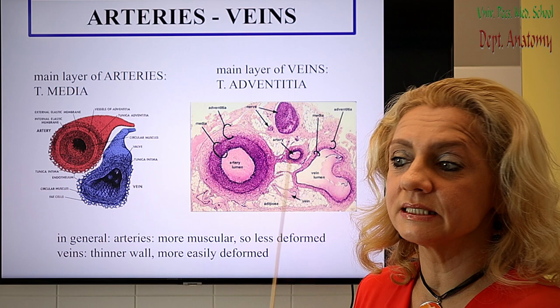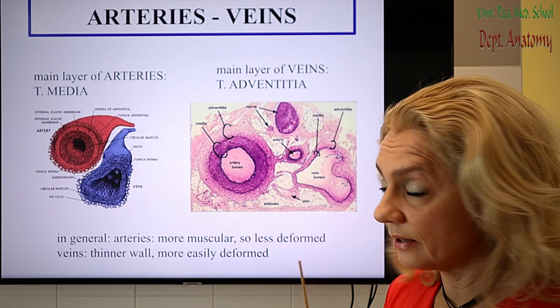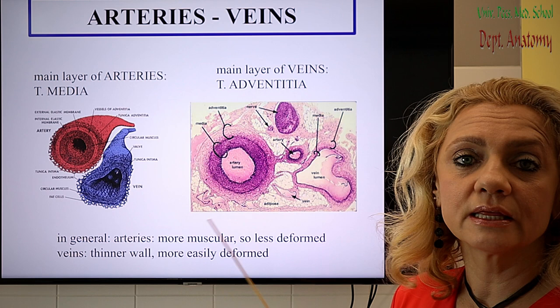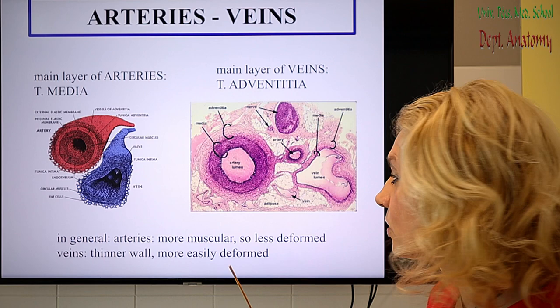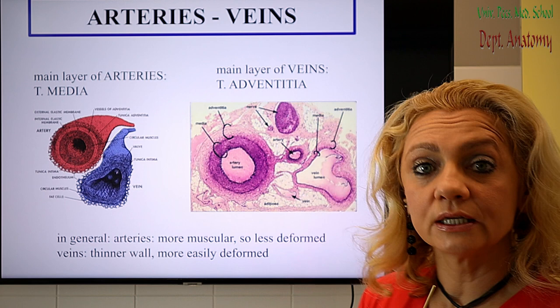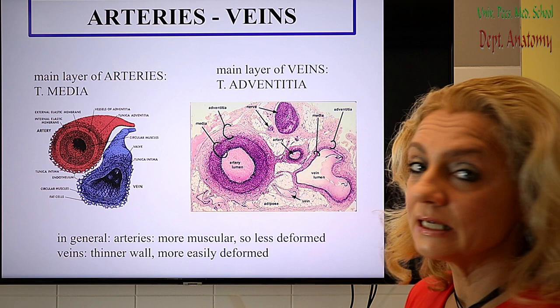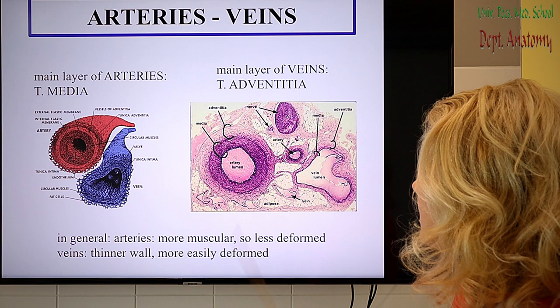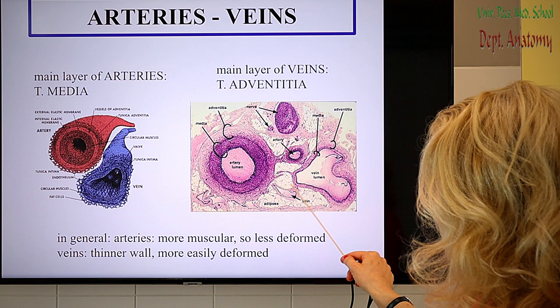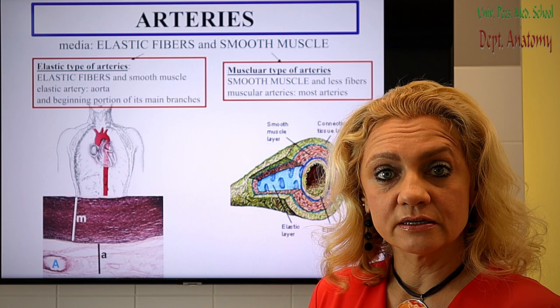Comparing arteries and veins, you can immediately see a big difference in wall structure. In arteries the main layer is the tunica media; in veins it is the adventitia. The media is more muscular in arteries than in veins. Arteries have a thicker, more muscular wall, so deformation is not easy. Veins have a thinner wall with more connective tissue and less muscle, so they can be more easily deformed — many times in a slide the deformed structure is more likely to be the vein.